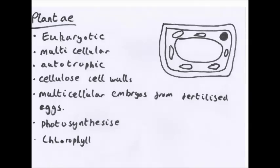Plantae, or plants. This is a very basic plant cell, obviously missing out most of the stuff. Just got your nucleus, vacuole, cell walls, cell membrane, and chloroplasts. They're eukaryotic, multicellular, autotrophic. They can produce their own food from photosynthesis. They have cellulose cell walls. They can produce multicellular organisms from fertilised eggs, and they can photosynthesise and also have chlorophyll. Very simple.